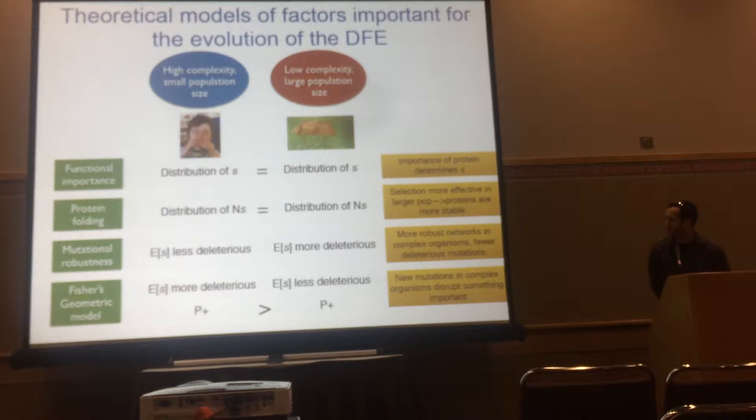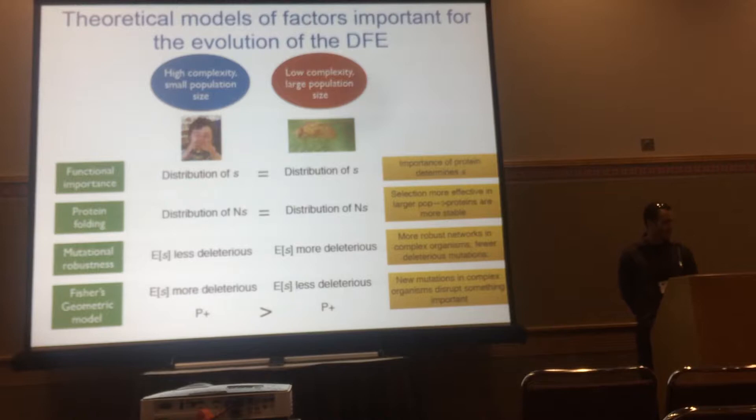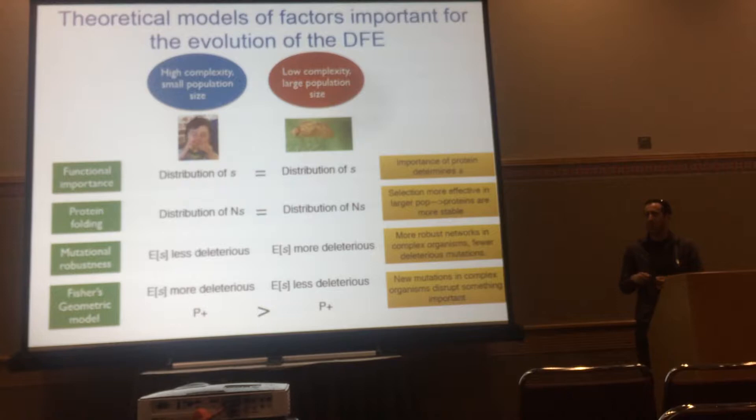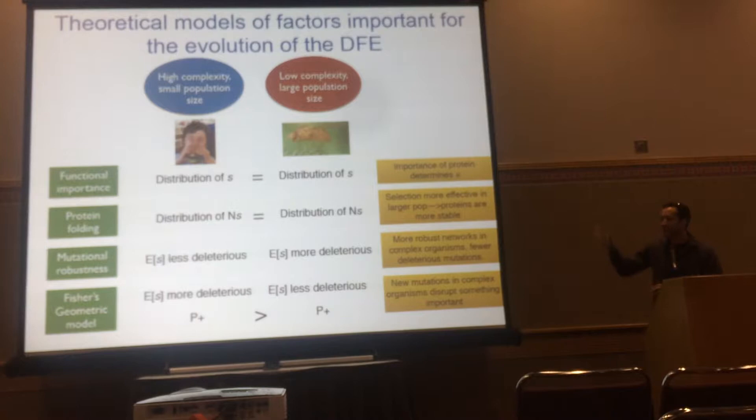Lastly, Fisher's geometric model makes the opposite prediction: the average selection coefficient would be more deleterious in the more complex species. The intuition is that with more phenotypes under selection, a mutation is more likely to disrupt something important. Fisher's geometric model also makes predictions about positive selection and the proportions of beneficial mutations, which I'll discuss later.